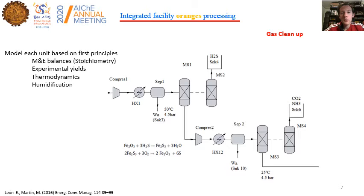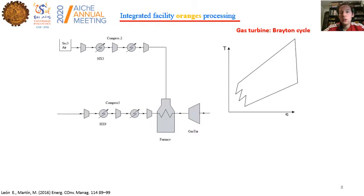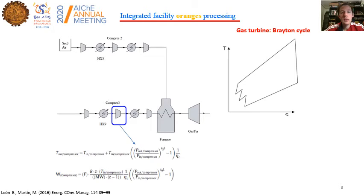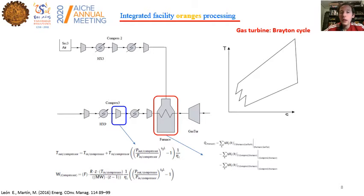The production of power from the biogas requires that we clean it up: removing H2S using a bed of ferric oxide, as well as removing traces of ammonia and CO2. Once the biogas is clean, we can use a Brayton cycle — an open Brayton cycle gas turbine — to produce power. We model it based on a polytropic compression step, an adiabatic combustion chamber, and an expansion.